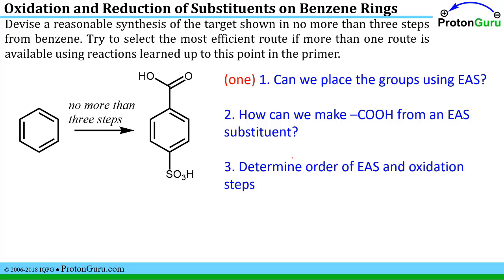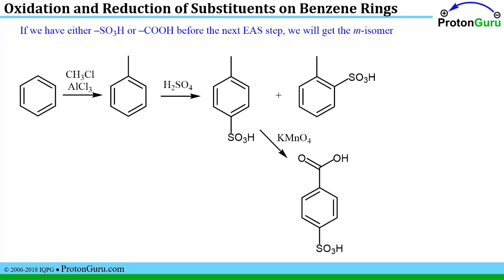At that point you can figure out what order you have to do the electrophilic aromatic substitution and oxidation steps. We have to reason ahead of time: if I have either the sulfonic acid or the carboxylic acid in place before the next electrophilic aromatic substitution step, well, these are both meta-directing groups, so we would get a meta isomer. But our target is the para isomer.